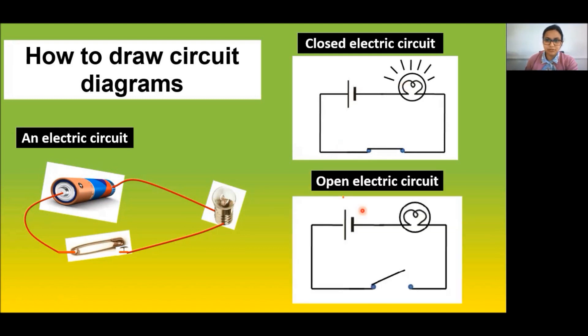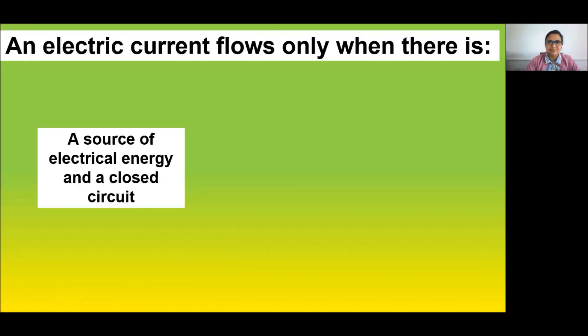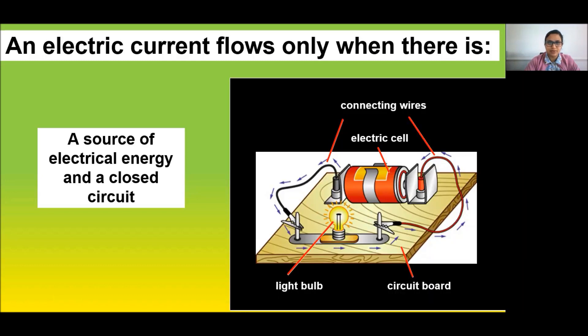For an open circuit, the switch is not connected. Electric current flows only when there is a source of electrical energy and a closed circuit.